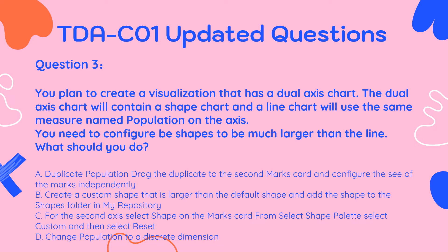A. Duplicate Population, drag the duplicate to the second marks card, and configure the size of the marks independently. B. Create a custom shape that is larger than the default shape and add the shape to the shapes folder in My Repository. C. For the second axis, select Shape on the marks card, from the shape palette select Custom, and then select Reset. D. Change Population to a discrete dimension.